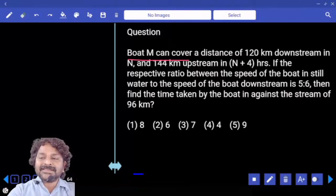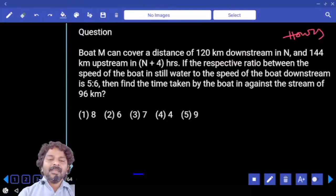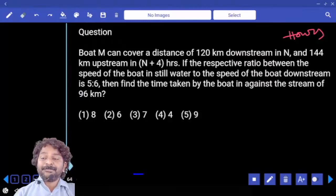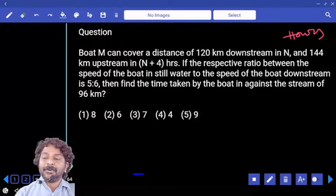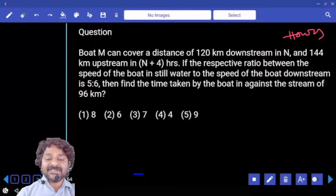Boat M can cover a distance of 120 kilometers downstream in N hours and 144 kilometers upstream in N plus 4 hours. The respective ratio between the speeds of the boat in still water to the speed of the boat downstream is 5 is to 6. Find the time taken by the boat against the stream for 96 kilometers.